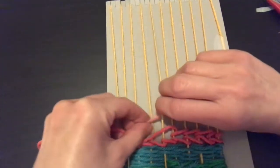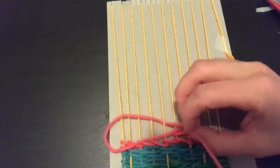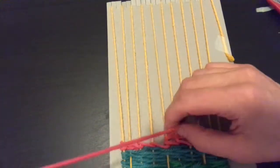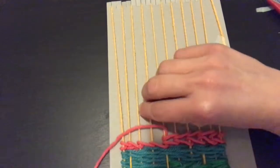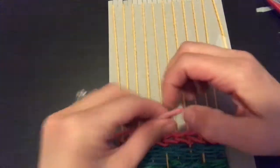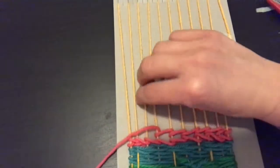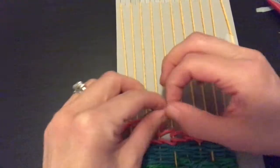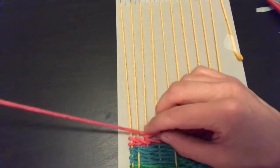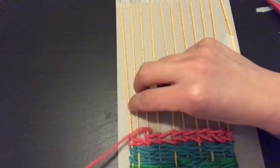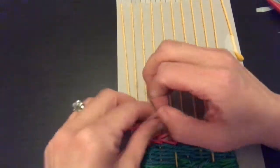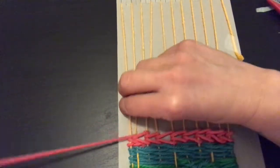Cross over, go behind, pull gently, and wrap it around. Cross over, behind, pull gently, wrap it around. Over, behind, gentle pull, and around. Over, behind, gentle pull, and around this one.